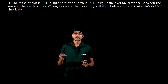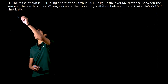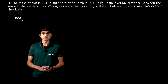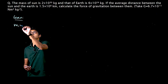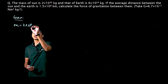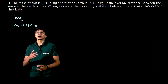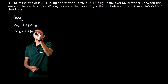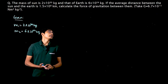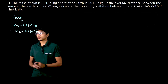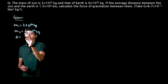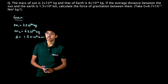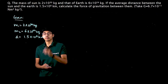We have all the quantities given and we have to find force. So let's first write what is given to us. Mass of sun, which I am taking as m1, is 2 into 10 raise to 30 kilograms. Mass of earth, which I am taking as m2, is 6 into 10 raise to 24 kilograms. After that it is given that the average distance between them, d, is 1.5 into 10 raise to 8 kilometers.